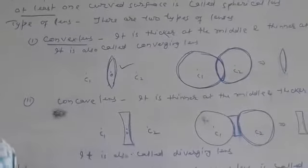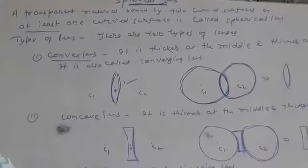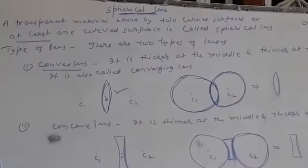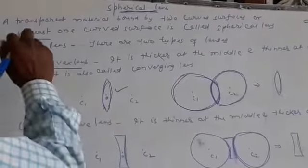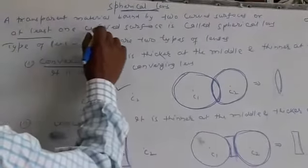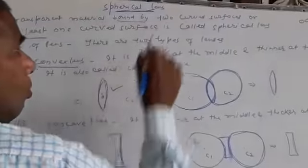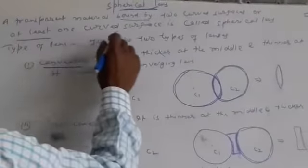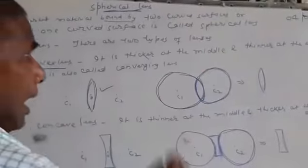Today I am going to explain spherical lens. First, I have to give the definition of spherical lens. A transparent material bound by two curved surfaces, or at least one curved surface, is called a spherical lens.